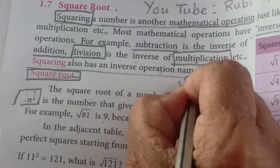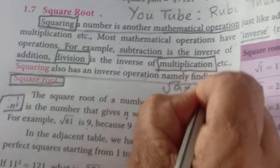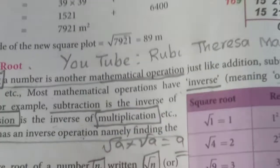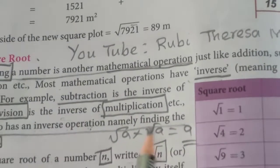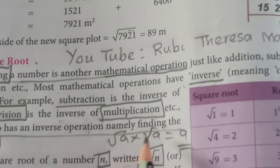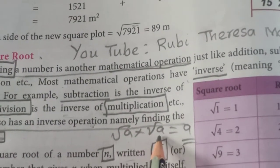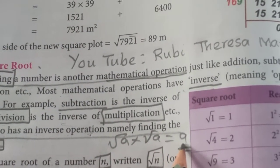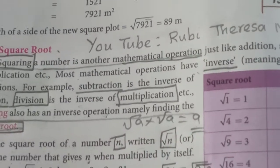Root 9 into root 9 equals 9. Root 9 into root 9 will give you 9.